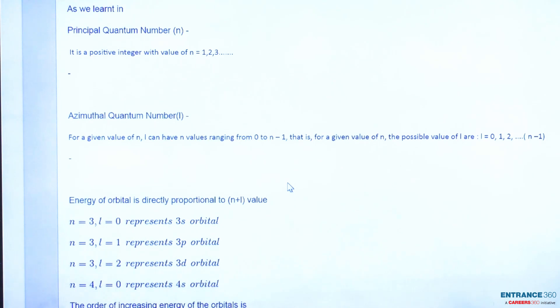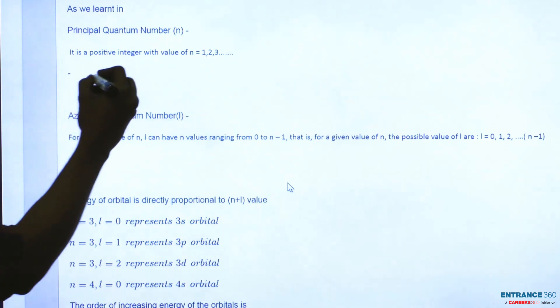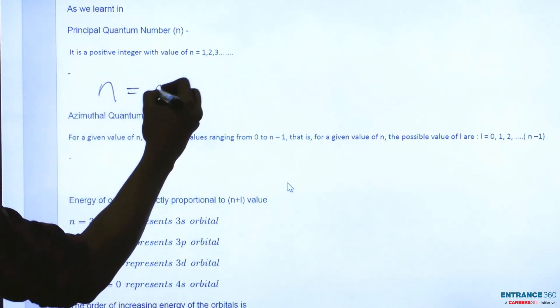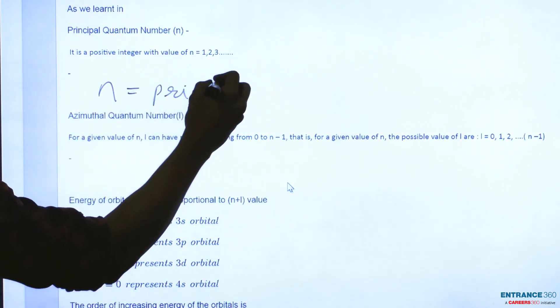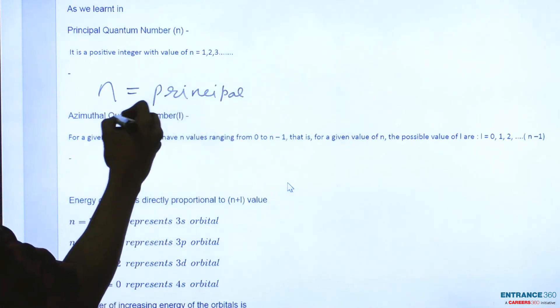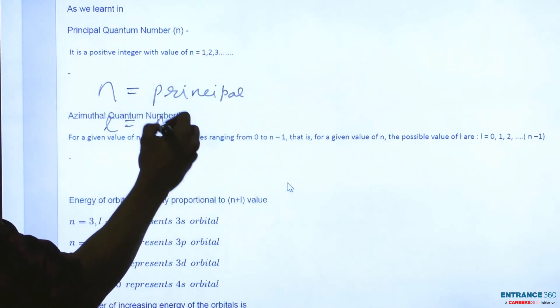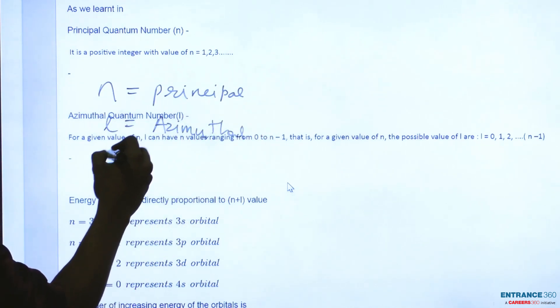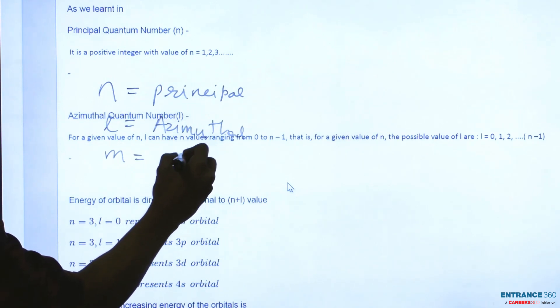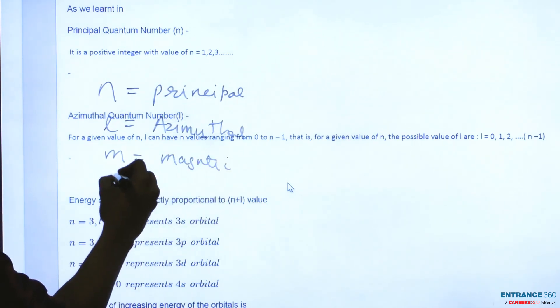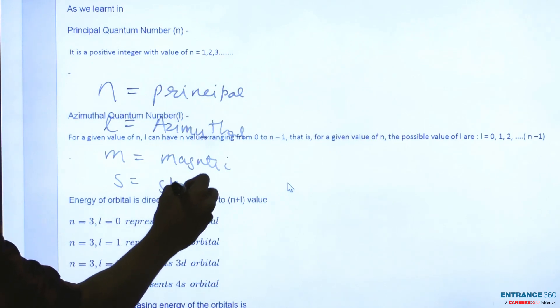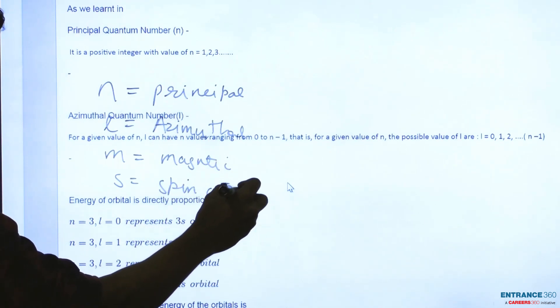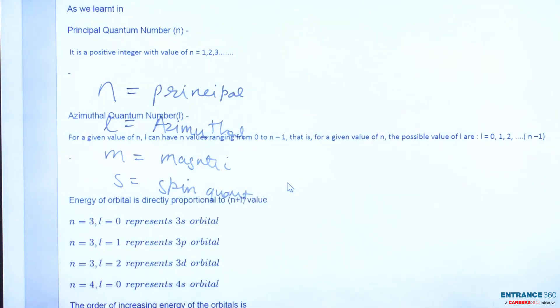By using the concept of quantum numbers, we will first define what is n, l, m, and s. n defines the principal quantum number, l is for azimuthal quantum number, m is for magnetic quantum number, and s represents spin quantum number. So these are the four sets of quantum numbers which we will use in order to solve this question.